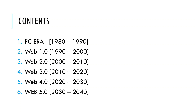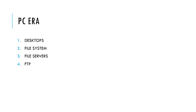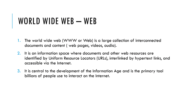Web 4.0 spans 2020 to 2030, and Web 5.0 spans 2030 to 2040. In the PC era we had desktops, file systems, file servers, and file transfer protocols. Then the actual web started — the worldwide web, which is a large collection of interconnected documents and content.